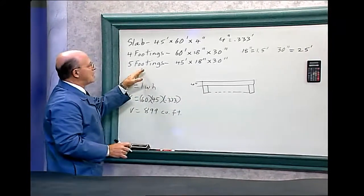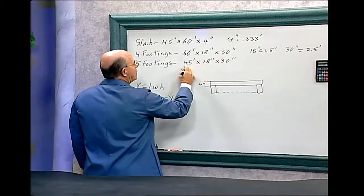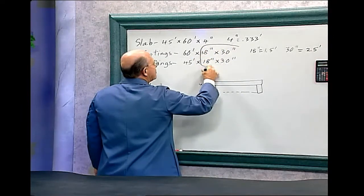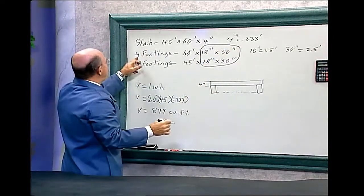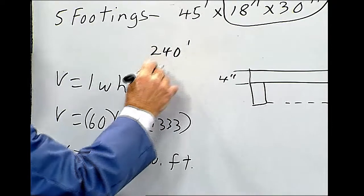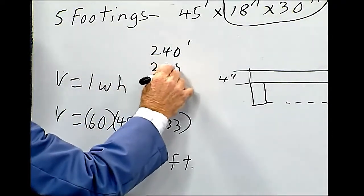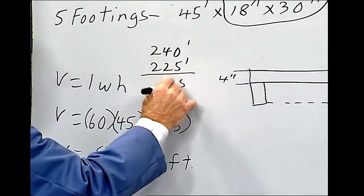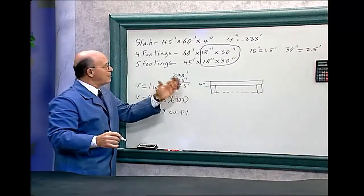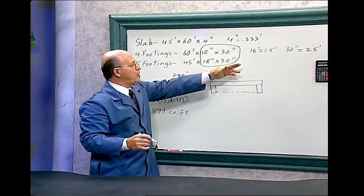Now let's find the footings. Now we have here with the footings, notice, it's 60 feet by 18 by 30 and 45 feet by 18 by 30. So these two are the same. So we have 4 times 60 is 240 feet. And 5 times 45 is 225 feet. And so that's 465 feet of footing measuring 18 inches by 30 inches, or 1.5 feet by 2.5 feet.